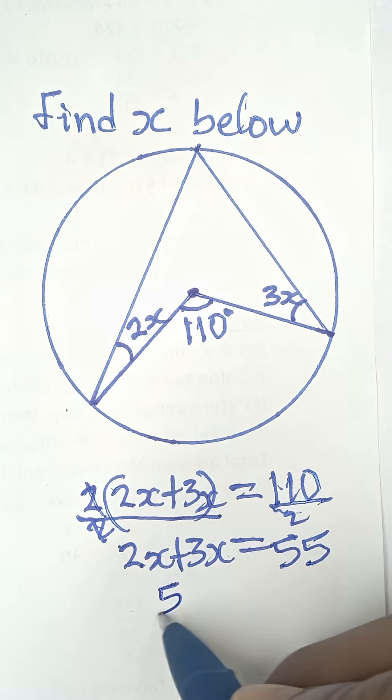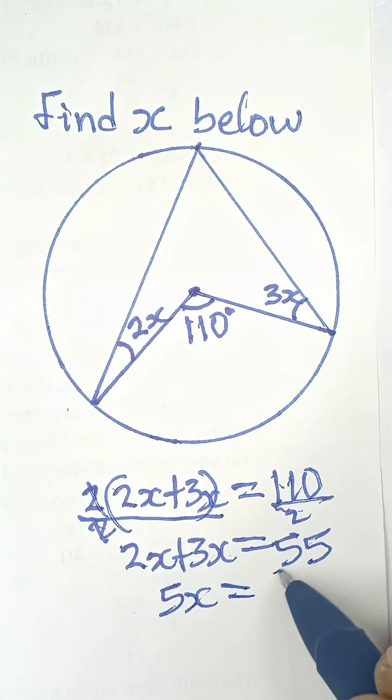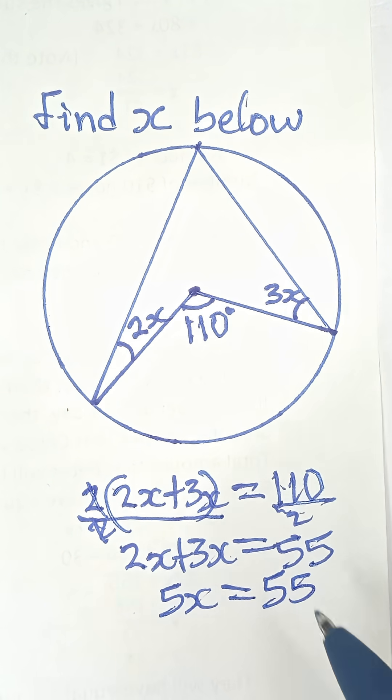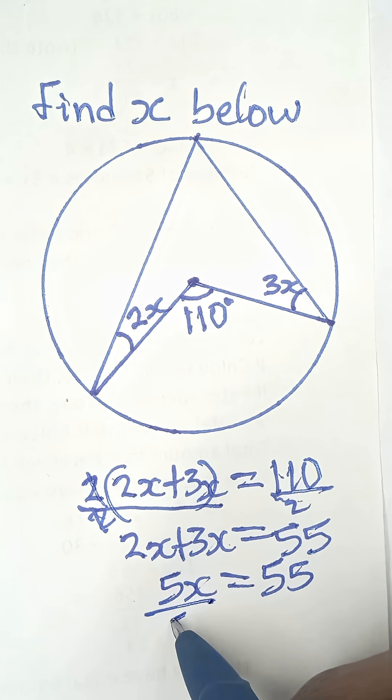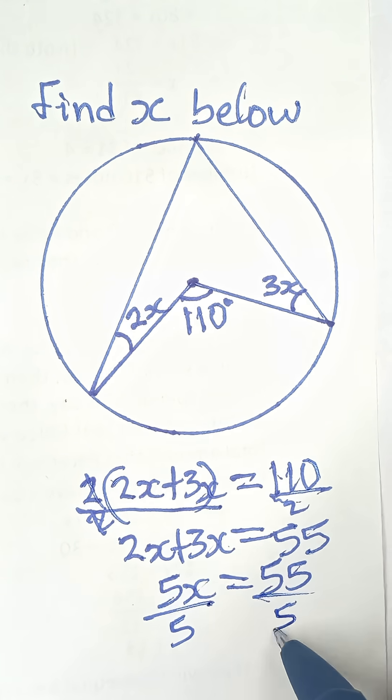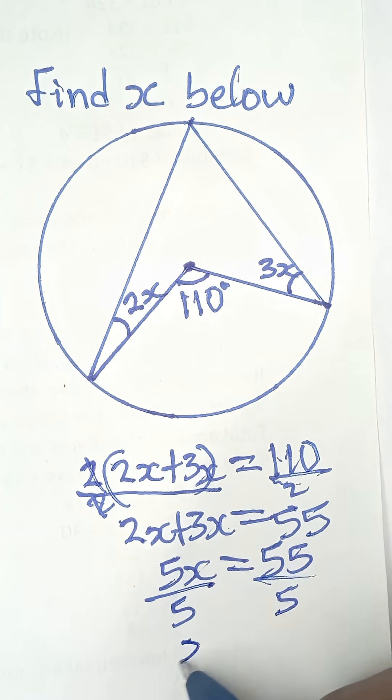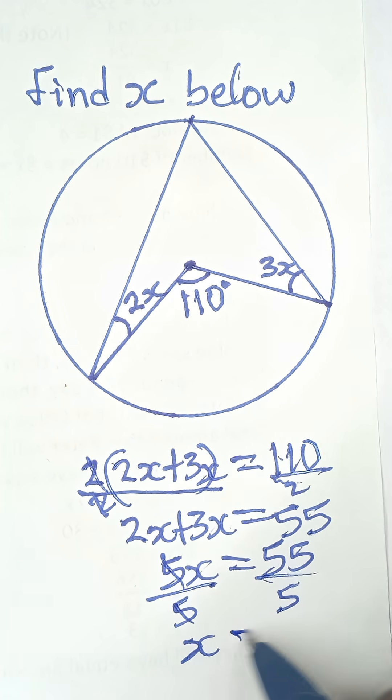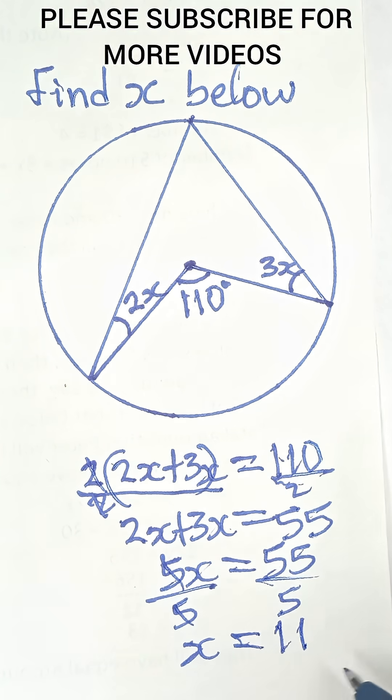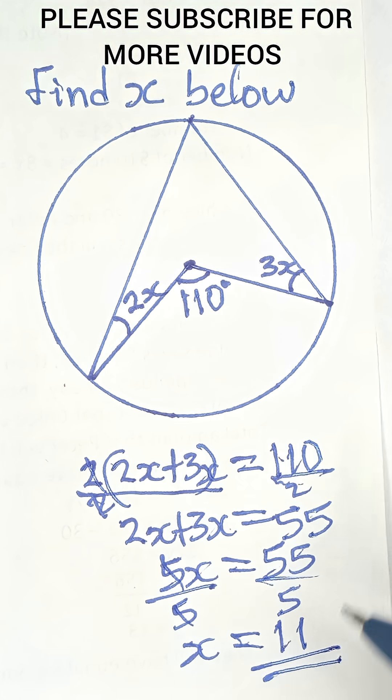So that means 5x equals 55, and when we divide both sides by 5, we are left with x equals 11 as the final answer.